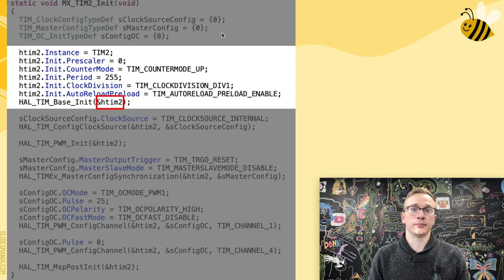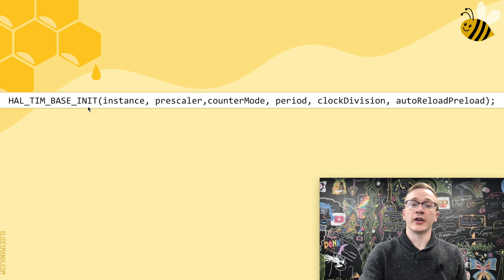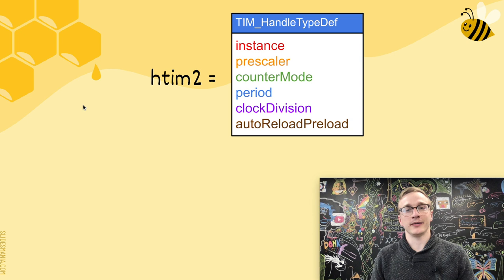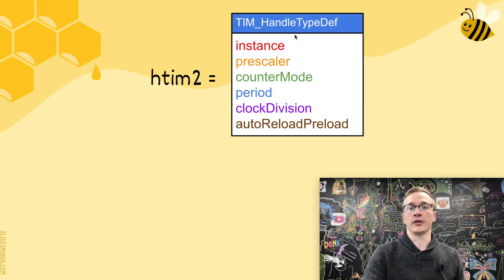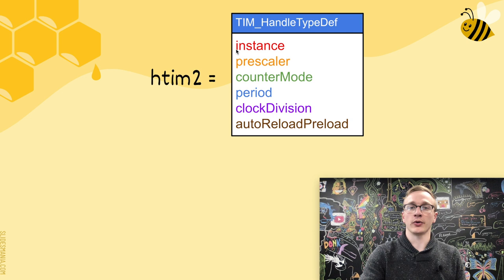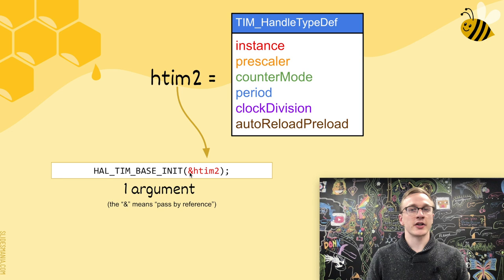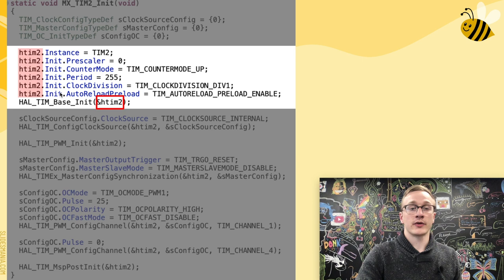The meat of the next chunk is really just the very last line of code, which takes one argument: htim2. All of the lines before this are really just configuring that variable. To do the base initialization of this timer we need six arguments, so one way would be to create a function that takes in six arguments. However, ST decided to tackle this differently — they create these complex variables or type definitions, called structs. Here's an example called TIM_HandleTypeDef, which is a collection of all the parameters needed to set up that base timer. So we create a variable called htim2 and then when we're ready to call HAL_TIM_Base_Init, we just pass in that one variable. The ampersand is C syntax for pass by reference, which has to do with pointers.